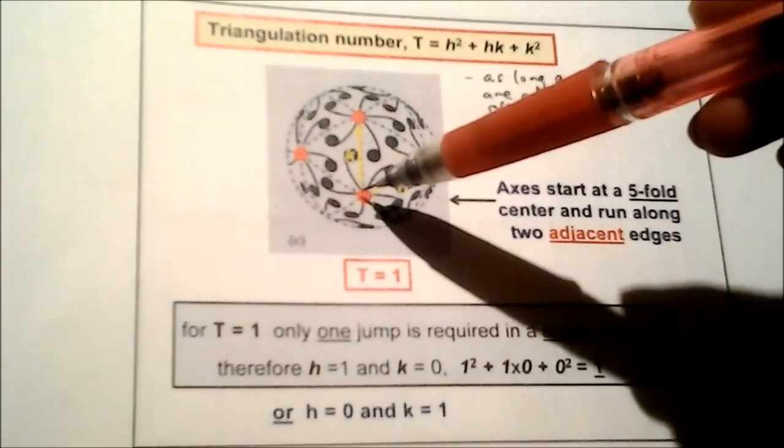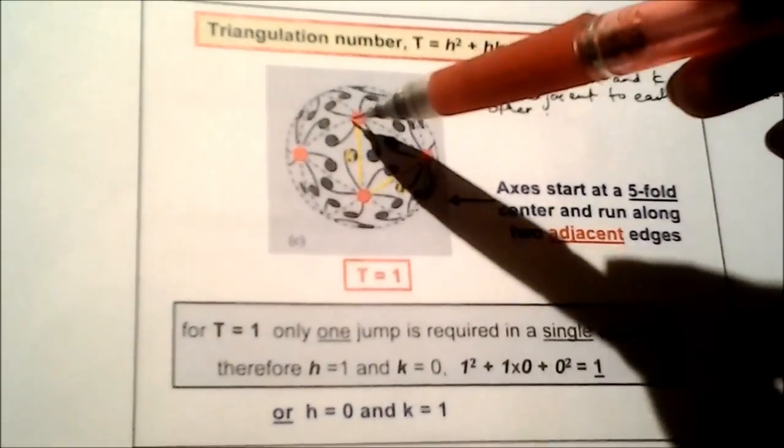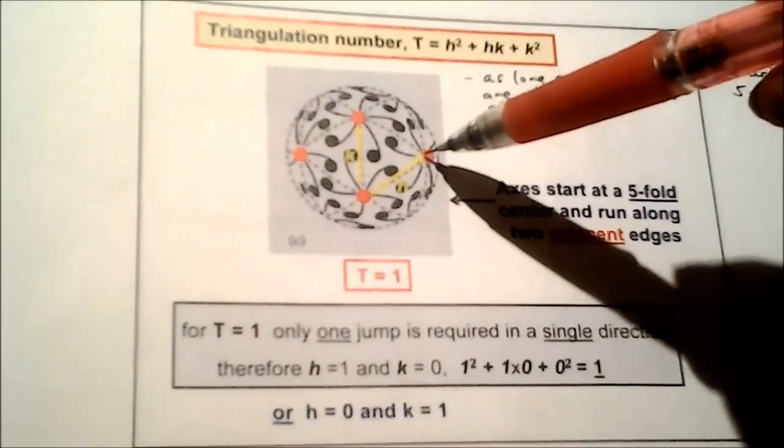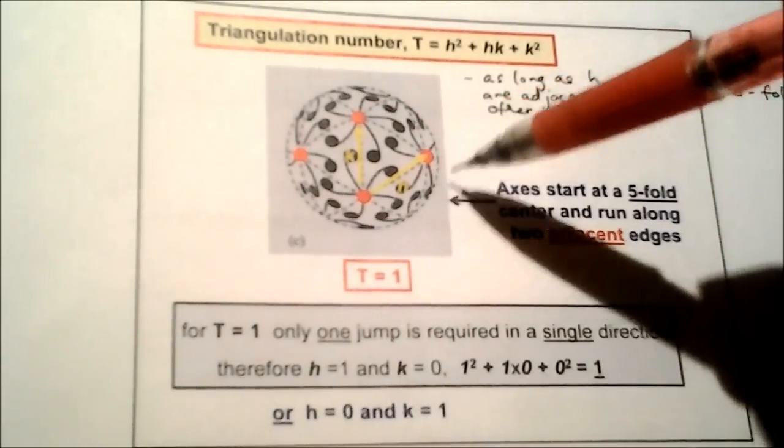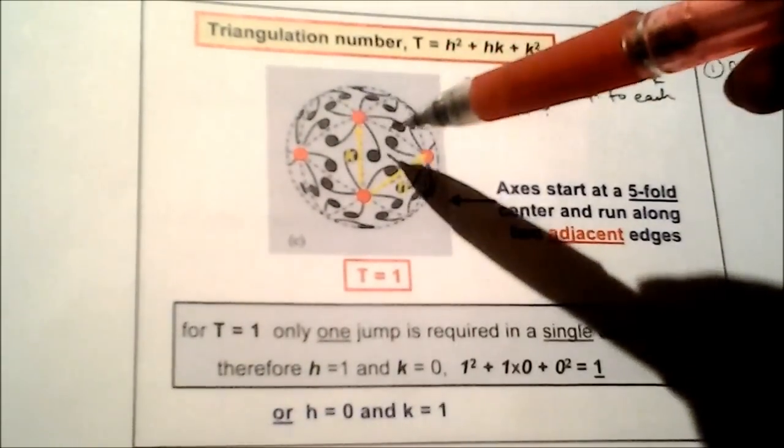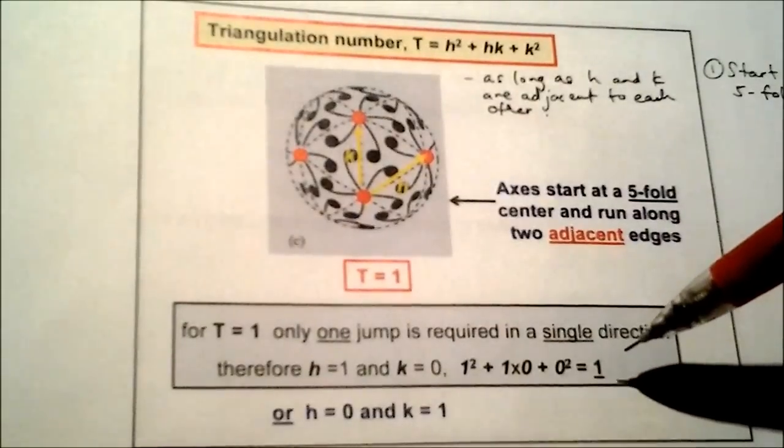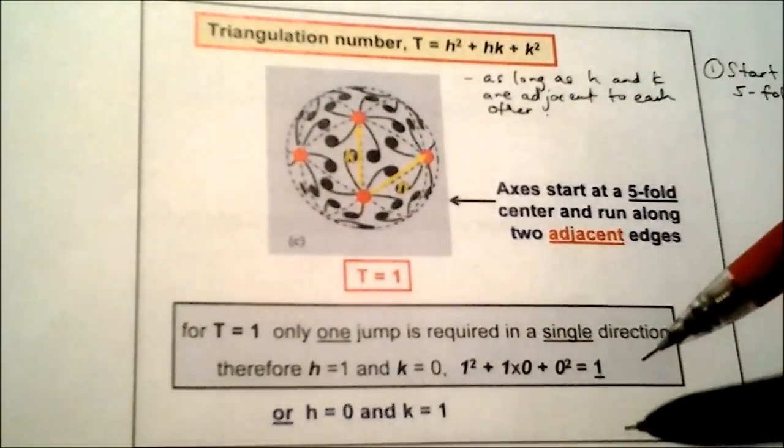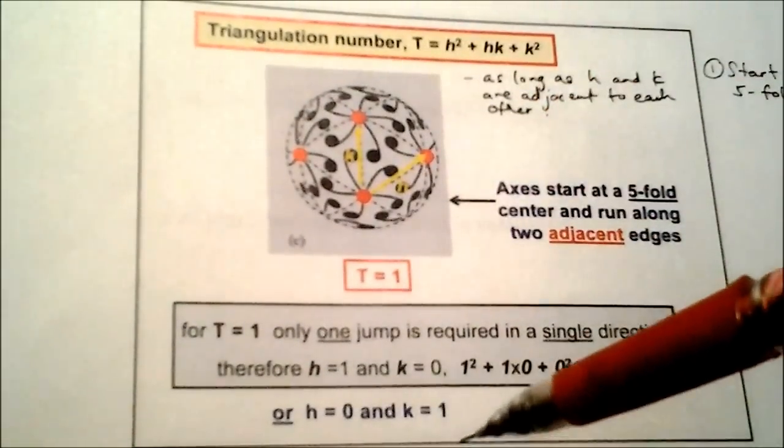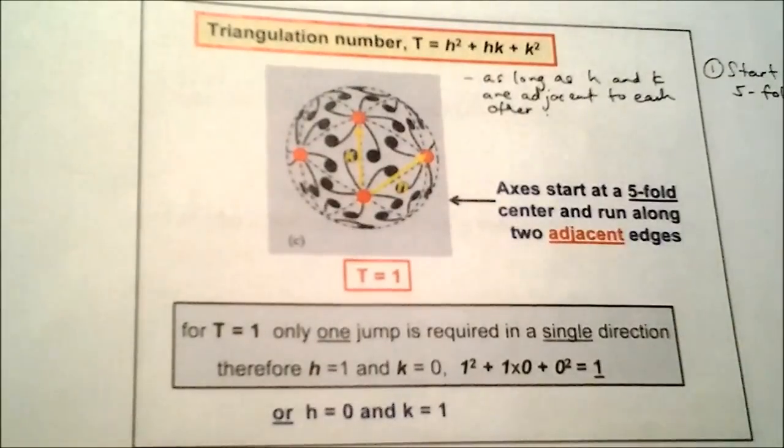From here to here, all you need is one jump that goes from here to here, which means that h is not even involved in the equation. Therefore, h would equal zero and k would equal one. When you substitute that into the equation, you would get T=1. That is pretty simple. I have another example.